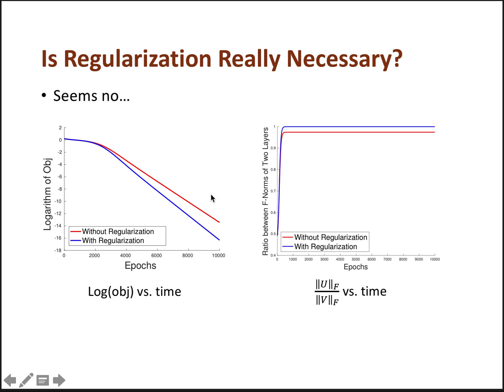And furthermore, we observe that the Frobenius norms of U and V stay pretty close to each other during the optimization. So actually, the highly unbalanced situation does not happen if we run gradient descent. So now a very interesting question arises, why does gradient descent automatically balance different layers and converge to a global minimum?